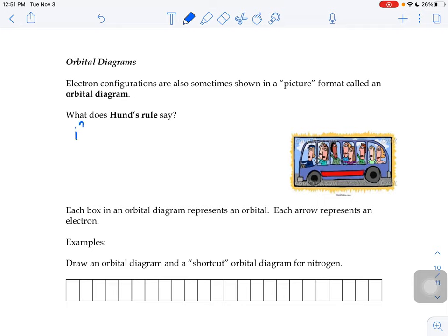So the orbital diagrams and this Hund's rule, what does Hund's rule say? That if given an option, electrons prefer to be unpaired.